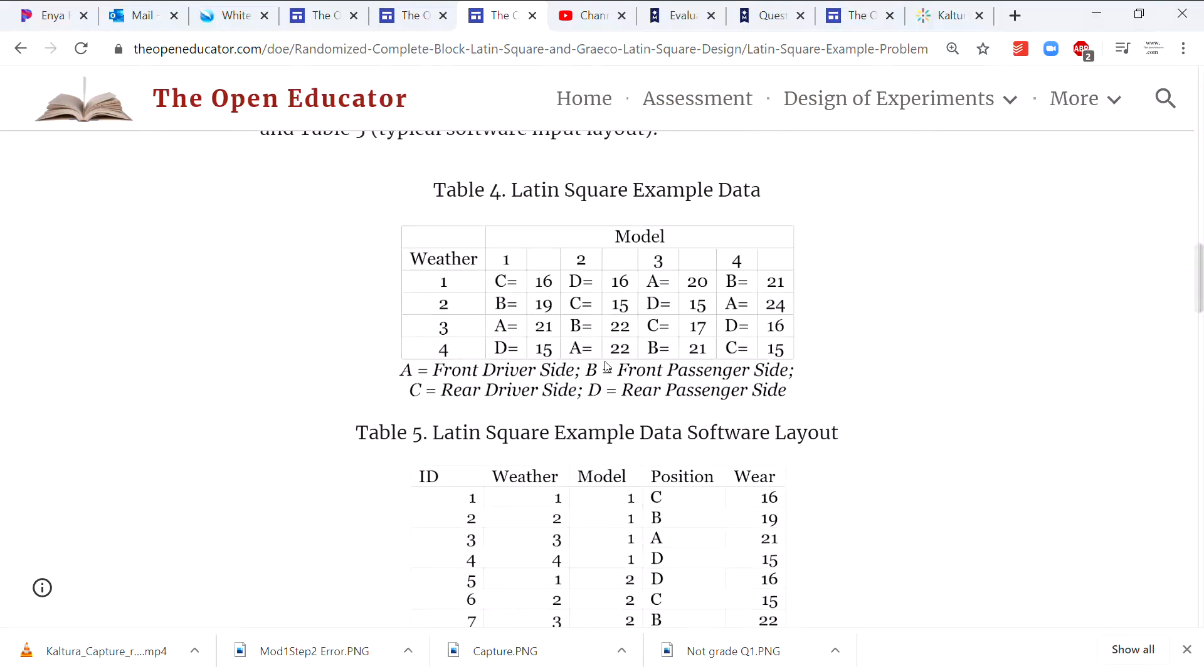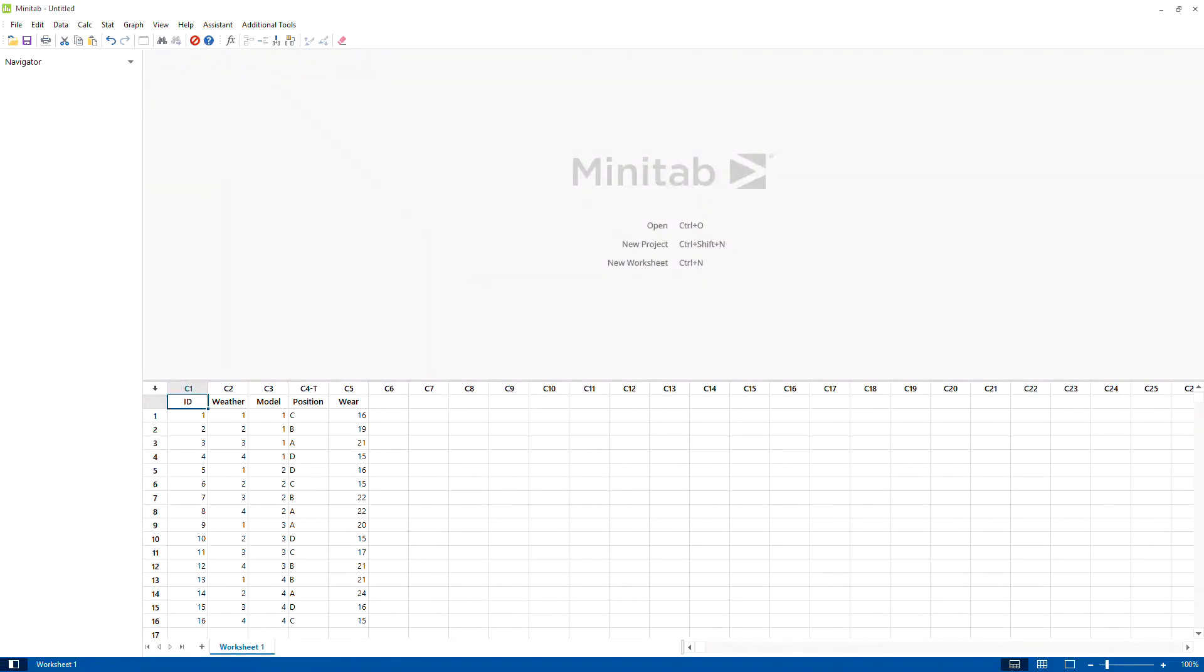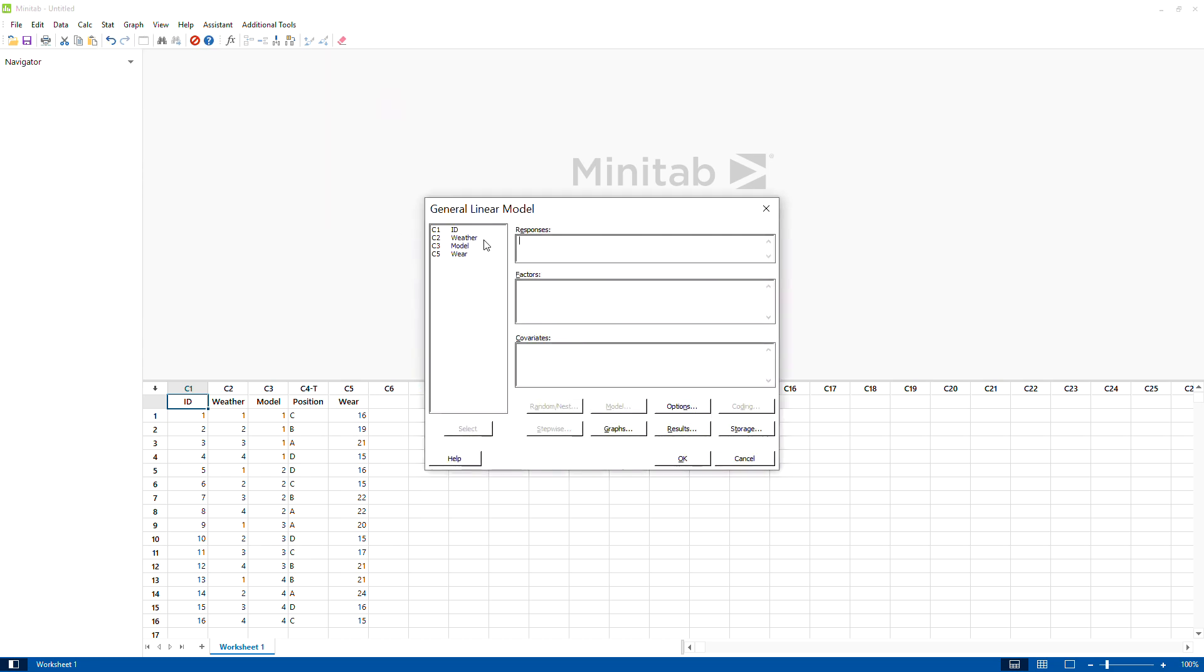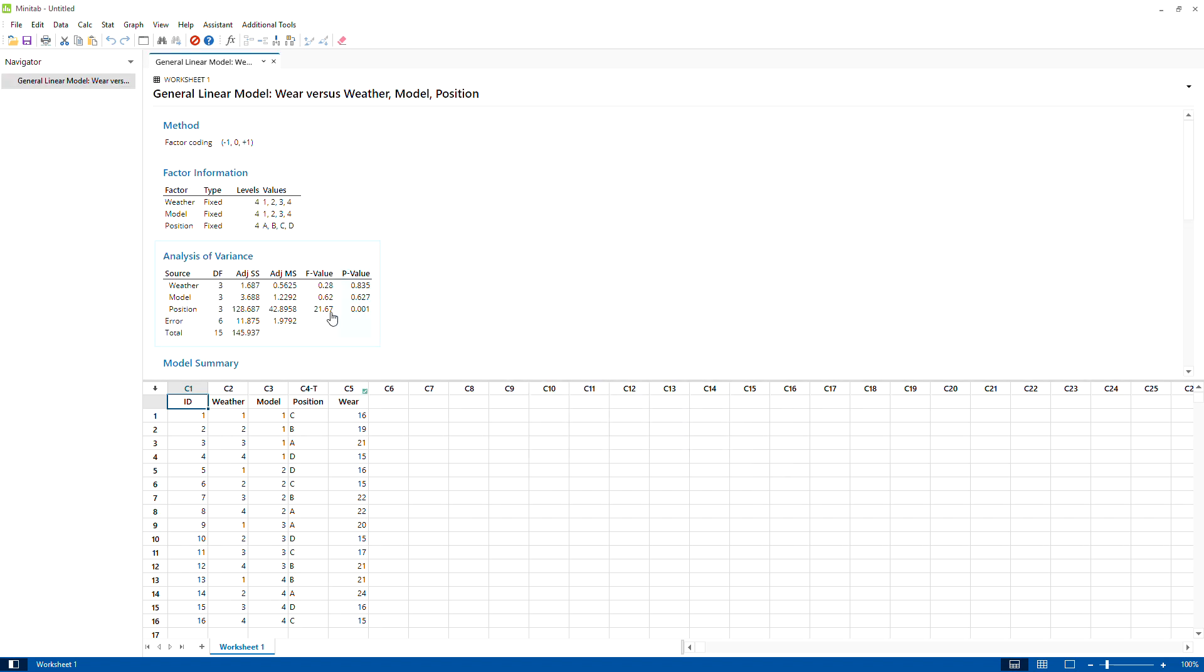Here is an example. Let me show you how to analyze the data. I've copied the data in Minitab already. You can go to Stat, ANOVA, generalized linear model. Basically select all these factors. The response is the tire wear and factors are the position, weather, and model. Leave everything as it is.